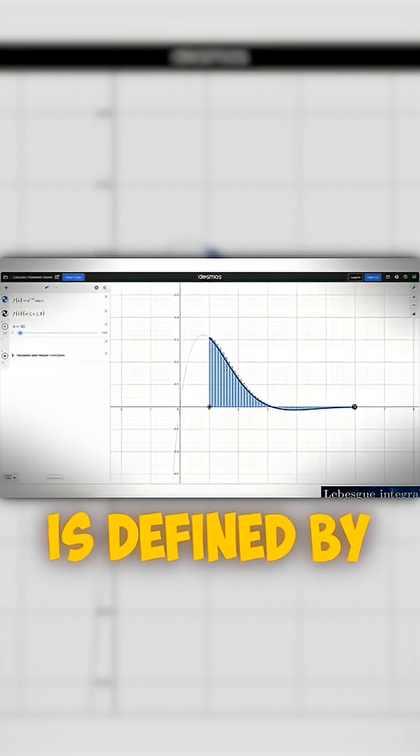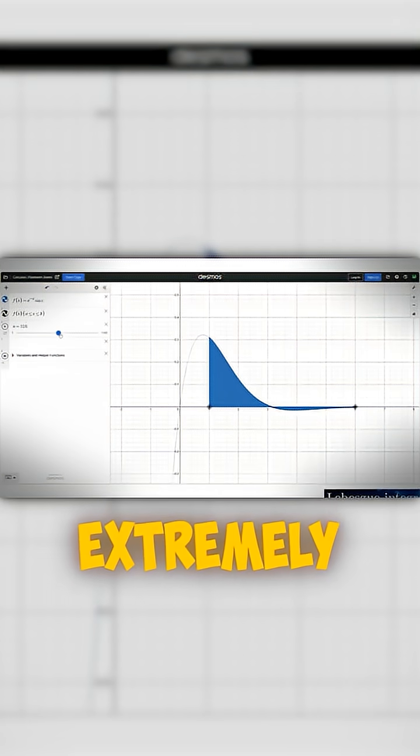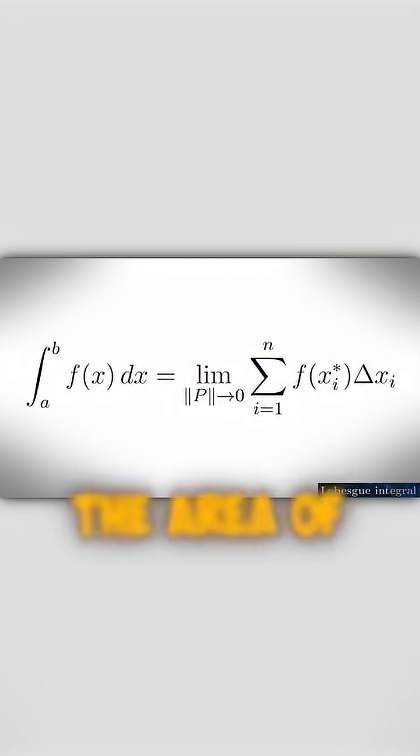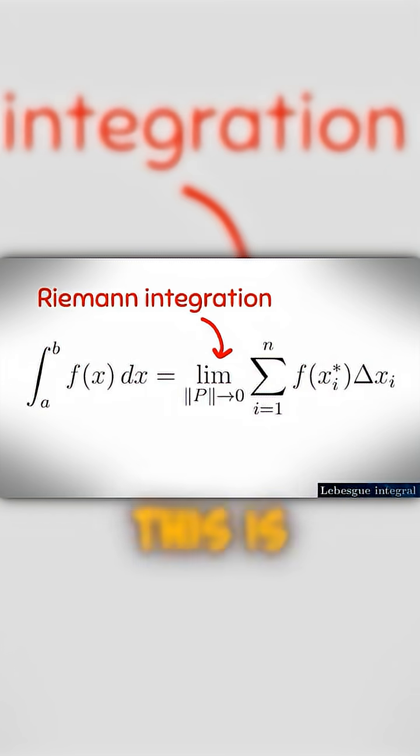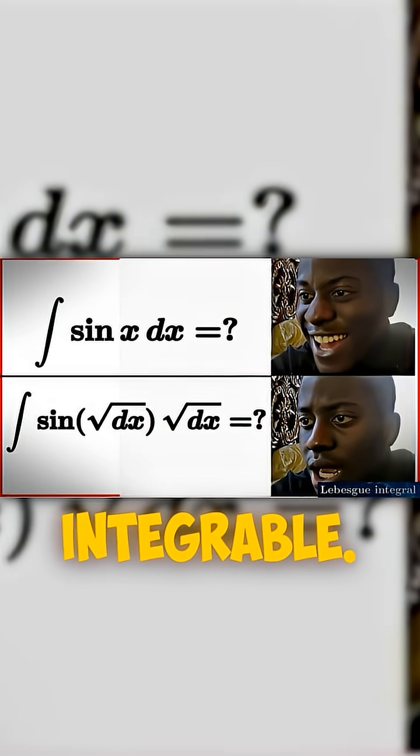In normal integration, the integral is defined by splitting the curve into extremely thin rectangles and adding the area of all those rectangles. This is called Riemann integration, but not everything is Riemann integrable.